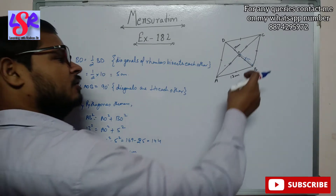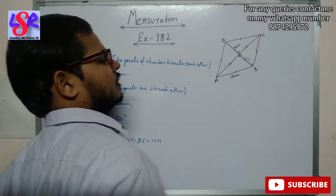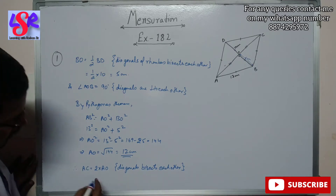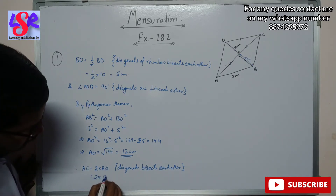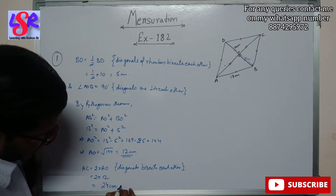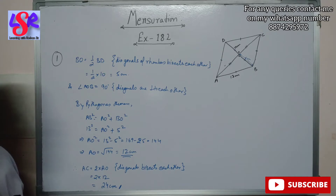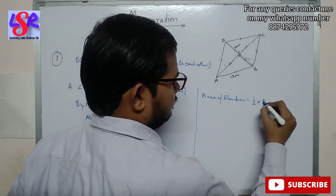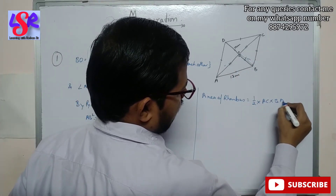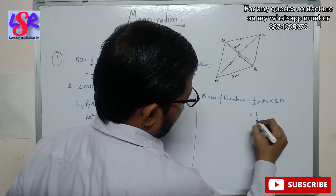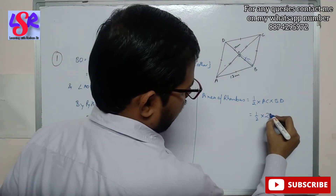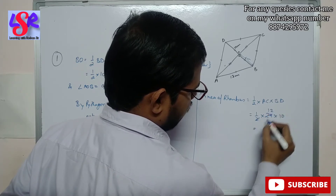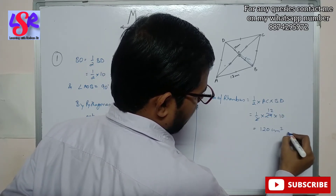We have AO = 12 cm. Since diagonals bisect each other, AC = 2 × AO = 2 × 12 = 24 centimeters. Now for the area of the rhombus: area = 1/2 × d1 × d2 = 1/2 × AC × BD = 1/2 × 24 × 10 = 120 centimeters squared.